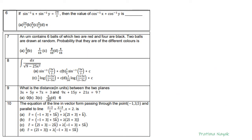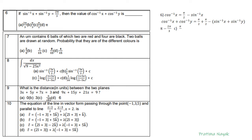Question 6: if sin⁻¹x + sin⁻¹y = 2π/3, find the value of cos⁻¹x + cos⁻¹y. We know cos⁻¹x = π/2 − sin⁻¹x. So cos⁻¹x + cos⁻¹y = (π/2 − sin⁻¹x) + (π/2 − sin⁻¹y) = π − (sin⁻¹x + sin⁻¹y) = π − 2π/3 = π/3. So C is the answer.